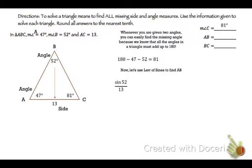Now let's use law of sines. So that's going to be sin 52 over 13 equals sin 81 over AB. Or that AB is the same thing as little c. AB and little c are the same thing. We're going to cross-multiply this.